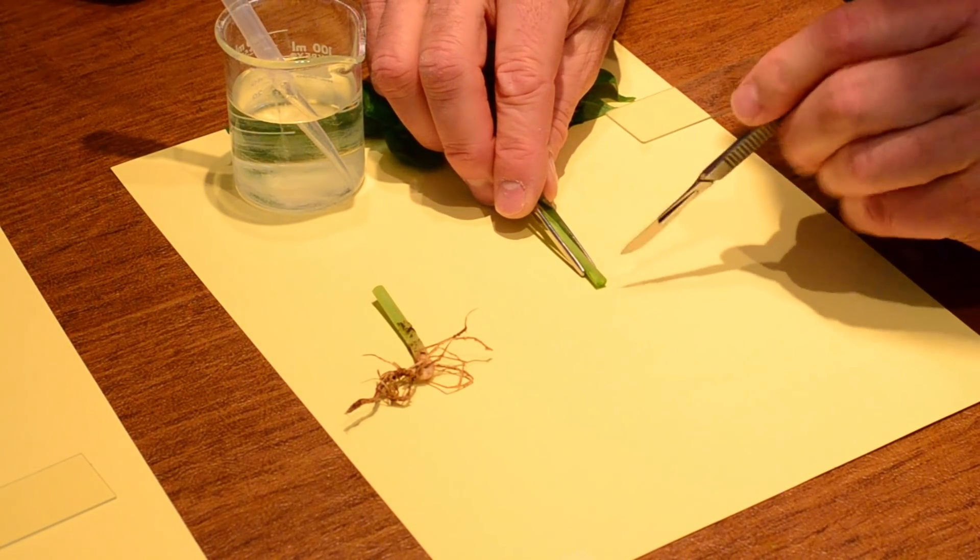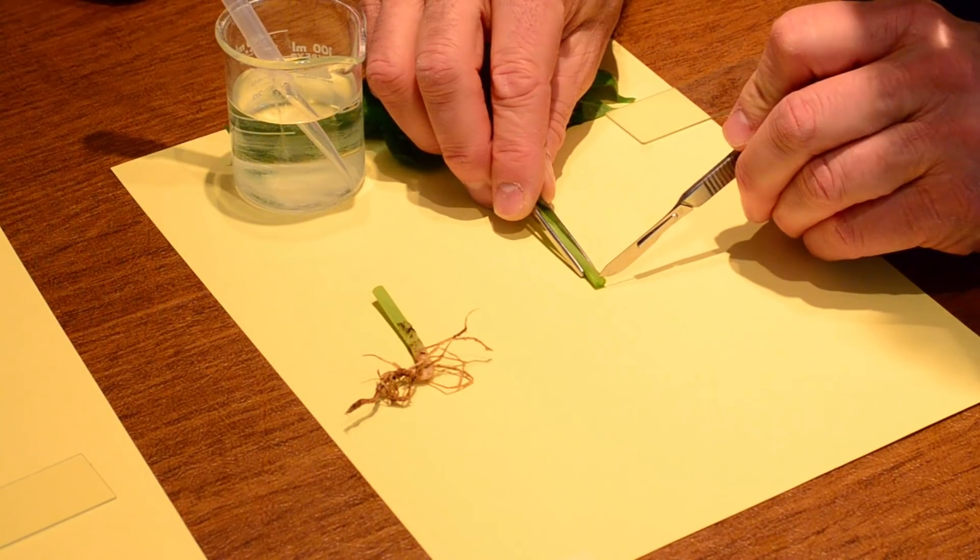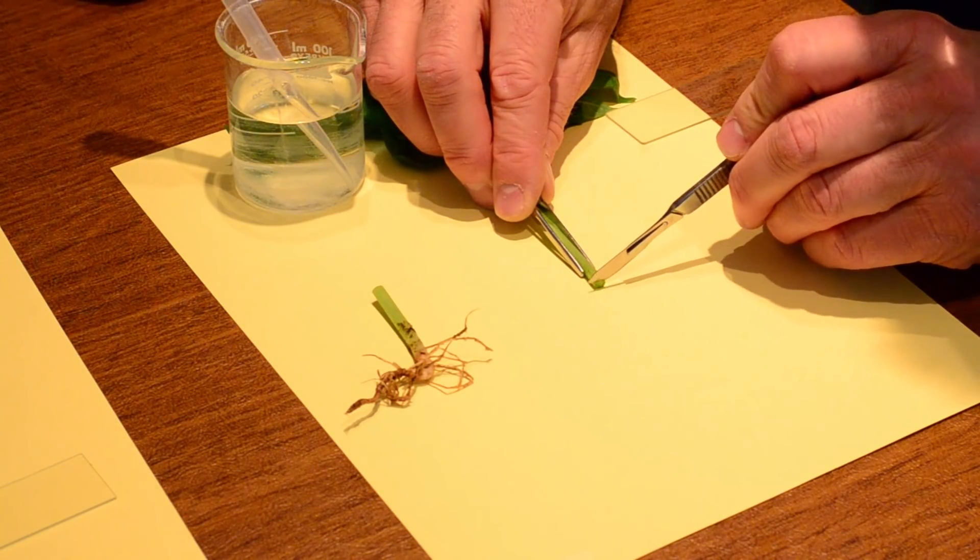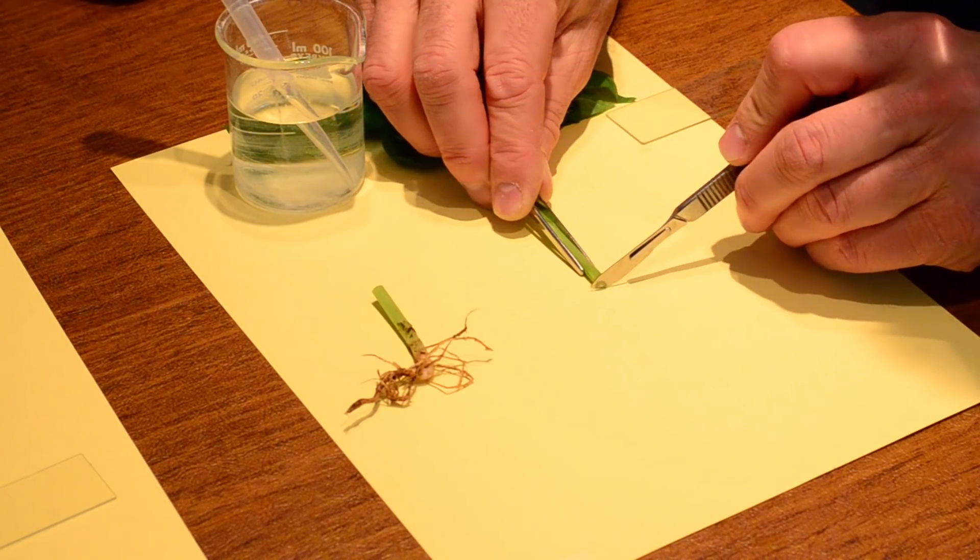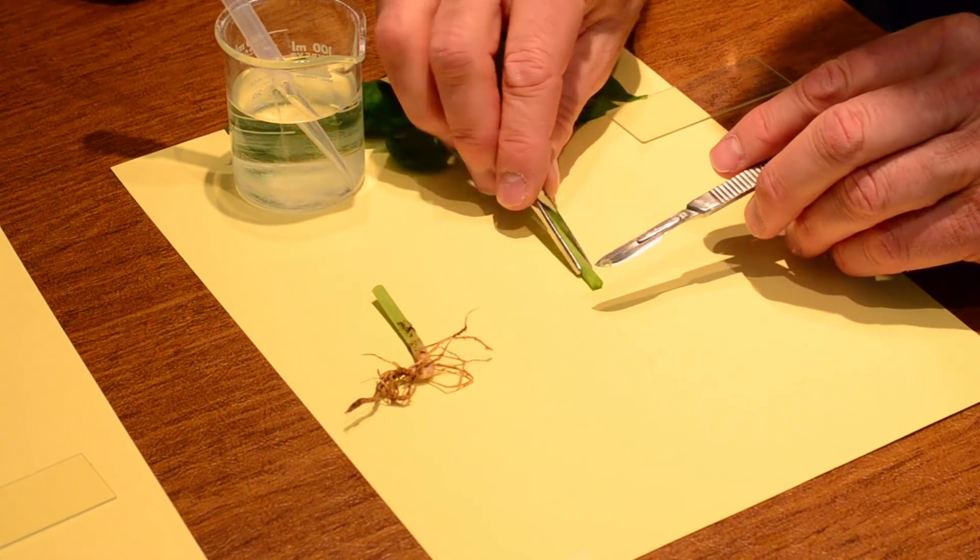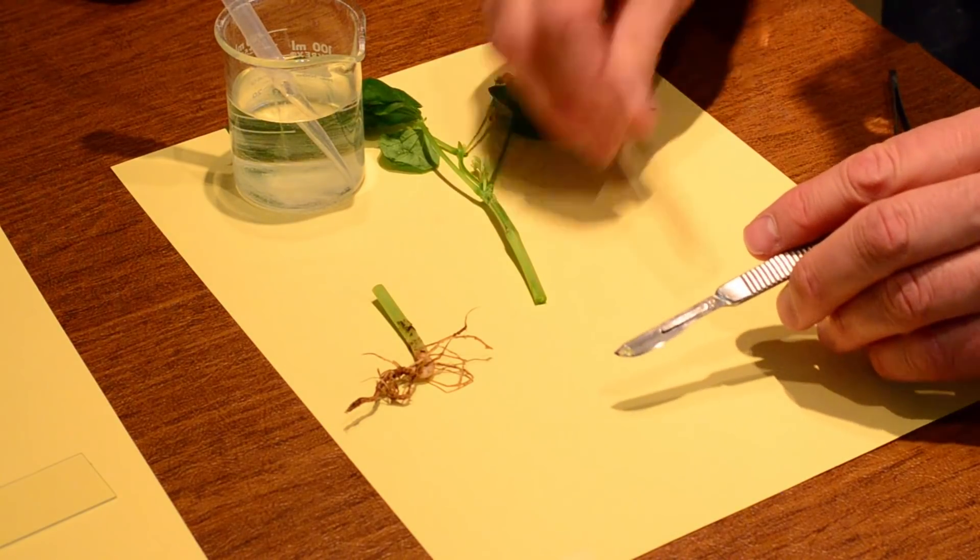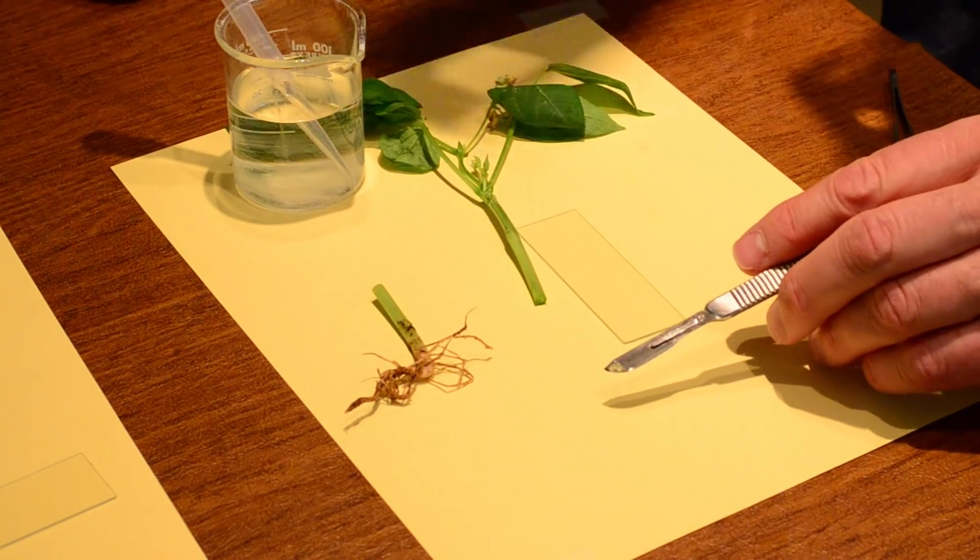And so I'm going to cut just a really thin sample. I want it real thin. Remember, I want that light to pass through. Now that's a pretty good cross section right there. It's not perfectly circular, but a real good cross section.